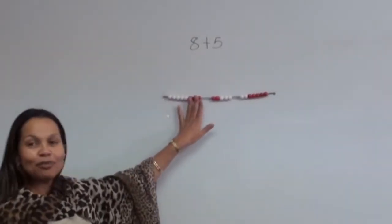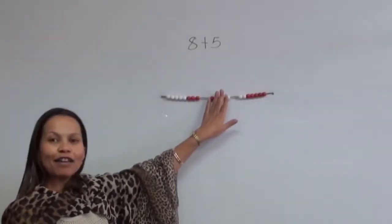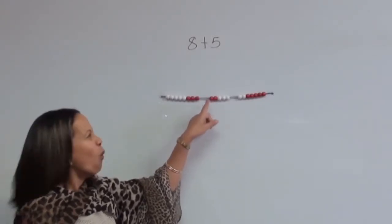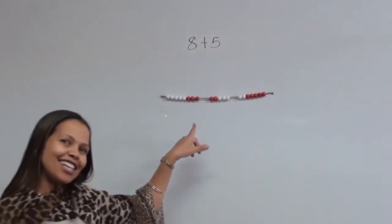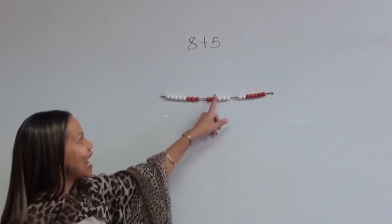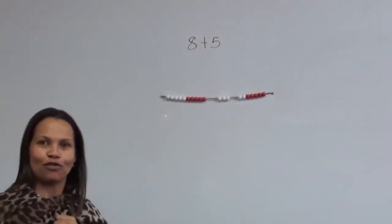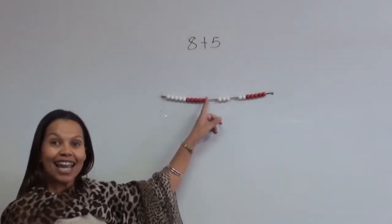So here I have 8 beads and I'm going to add 5 more. But I don't want to add them one at a time. When I look at the beads, I can see that I can make 10 by adding 2 first. 8 plus 2 is 10.